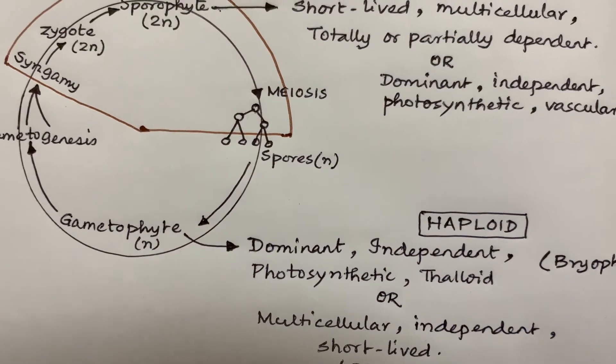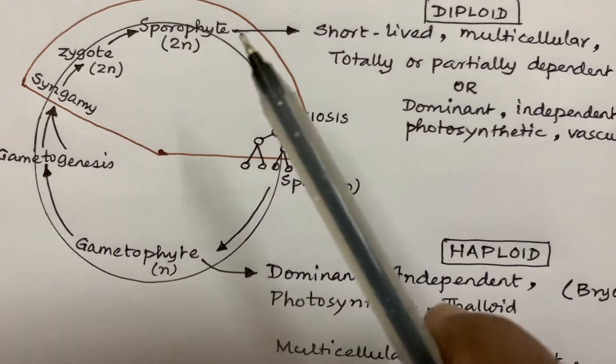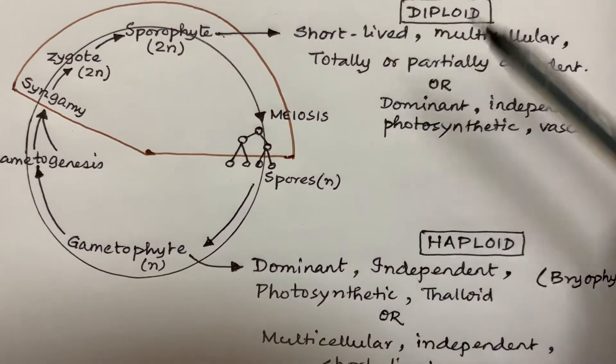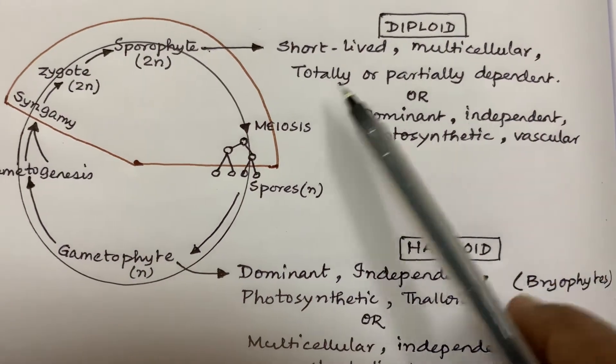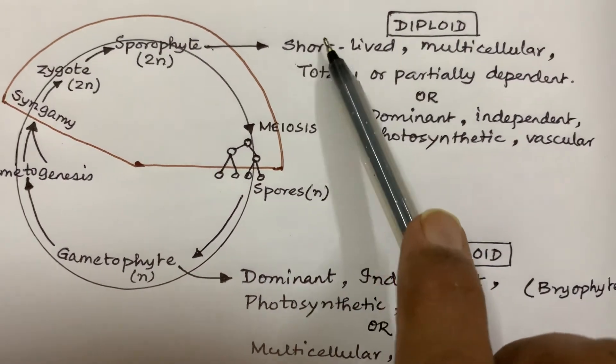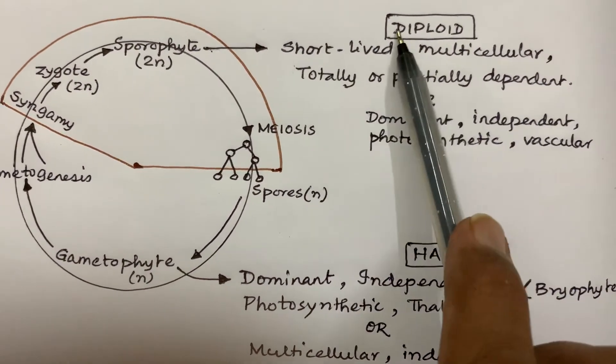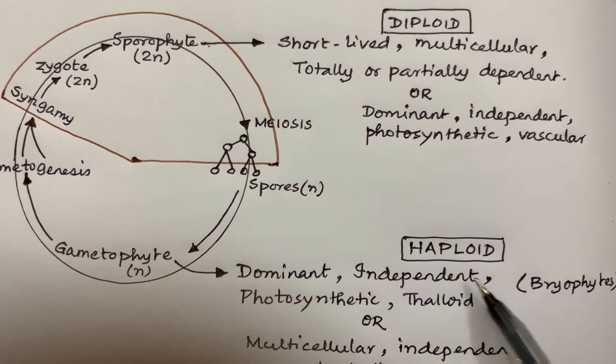Almost the same, almost the same. This is the main difference which you have to remember: in which type of plants is this condition prevalent—short-lived, multicellular diploid phase and dominant, independent haploid phase? You have to say bryophytes.